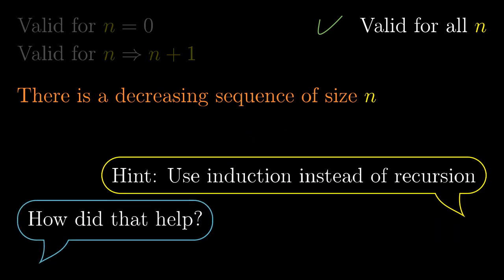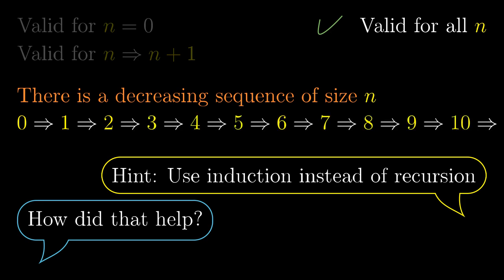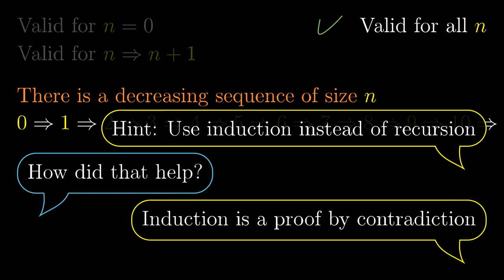I know, it still looks like infinite proof. First we get the length 1 from length 0, in the second step we get the length 2 from length 1 and so on. The trick is that there is also another view on induction. The mathematical induction can be phrased as an ordinary proof by contradiction.